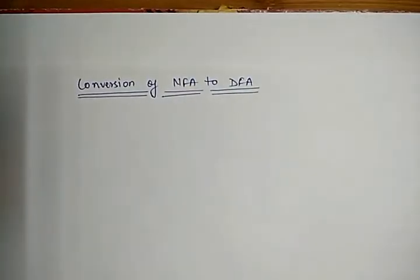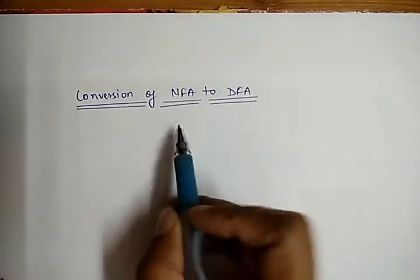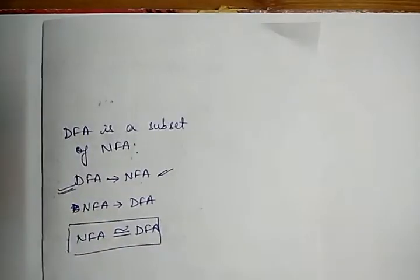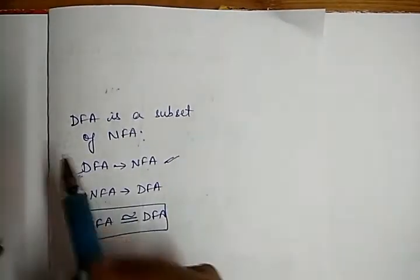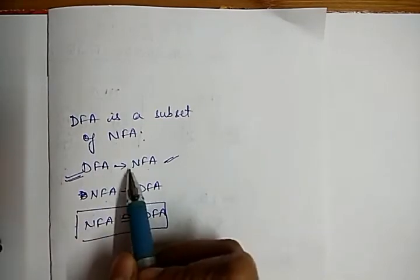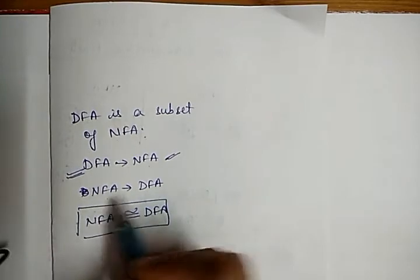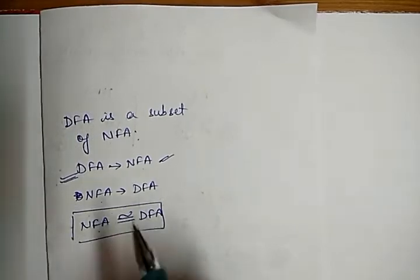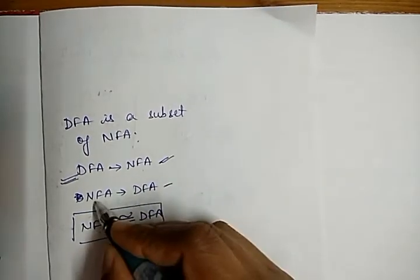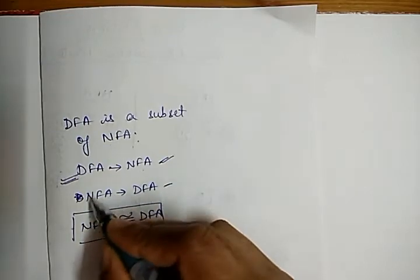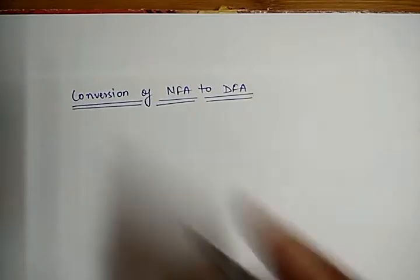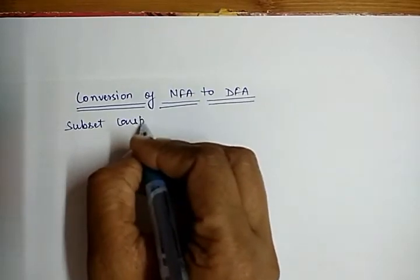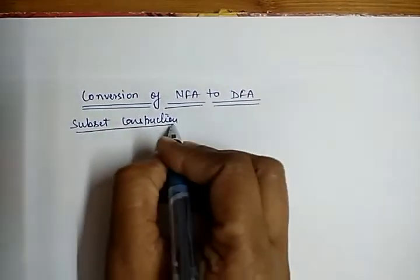Hello friends. The next topic is the conversion of NFA to DFA. As discussed in my previous video, DFA is a subset of NFA, so all DFAs are NFAs. If we convert NFA to DFA, then NFA and DFA are equivalent to each other. To prove this property, we use a technique known as the subset construction technique for converting NFA to DFA.